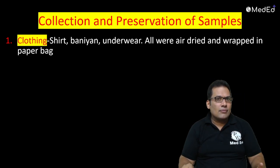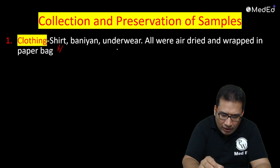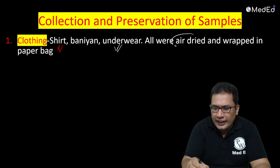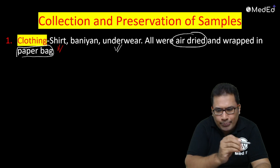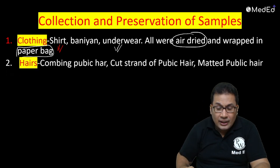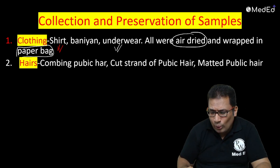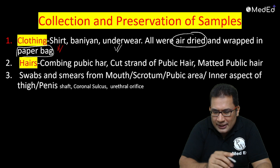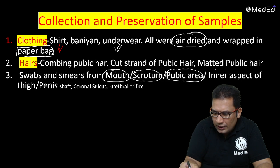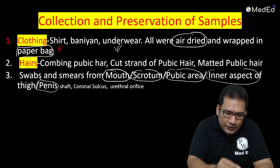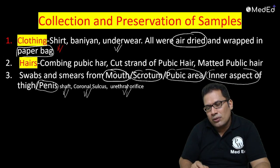What samples to collect: First, clothing — for example the shirt worn by the accused — especially inner garments. These should be air-dried (remember: air-dried) and wrapped. This is very important evidence to be collected. Then hair — especially from the pubic area. Swabs from: mouth/oral cavity, scrotum area, inner aspect of thigh, and from the penis — specifically from the coronal sulcus and the urethral orifice. Three swabs can be taken from the penis.